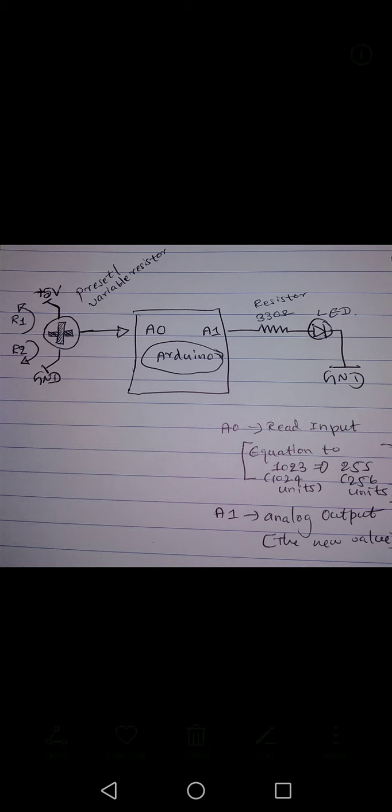Have a look at the diagram. The picture with the arrows will explain what we have done. We take an analog input from a preset or variable resistor on the top left, and that analog input goes to A0 of the Arduino. According to the analog input, we give an output on A1 of the Arduino. You can see a 330 ohm resistor connected to pin A1 on the right side, along with an LED that is grounded.